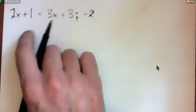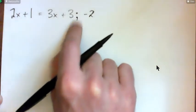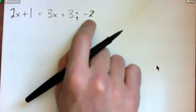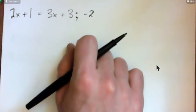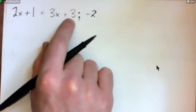So we're gonna solve this problem. It's 2x plus 1 equals 3x plus 3, and then there's a semicolon and there's this number here, negative 2. The semicolon is just separating this equation from this number.